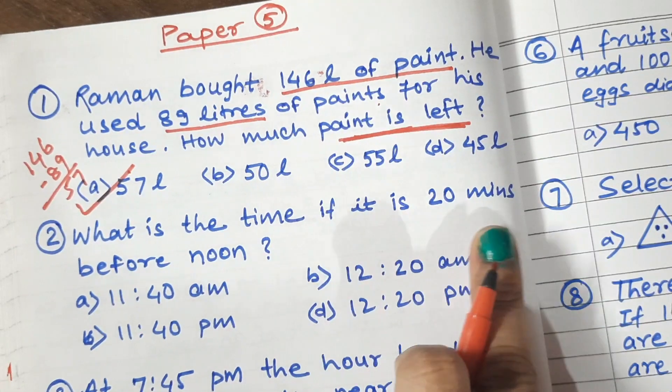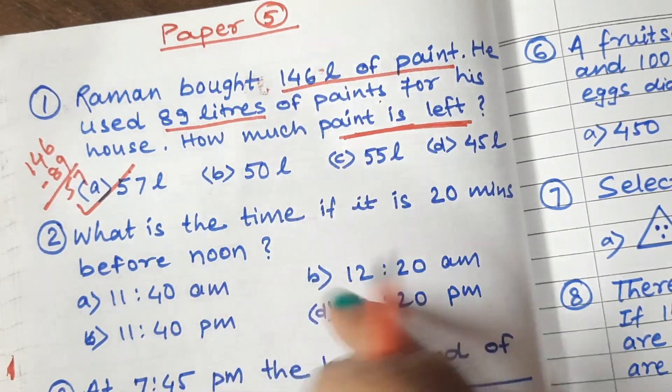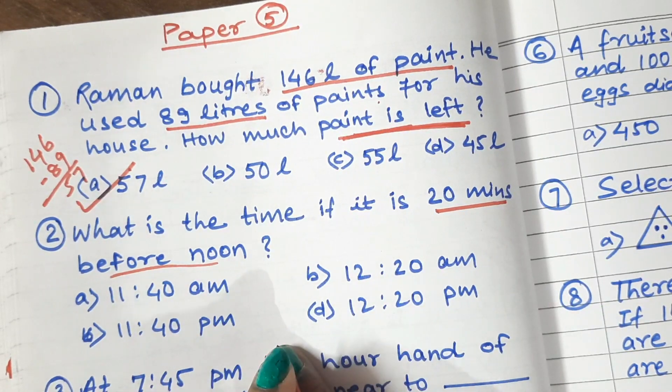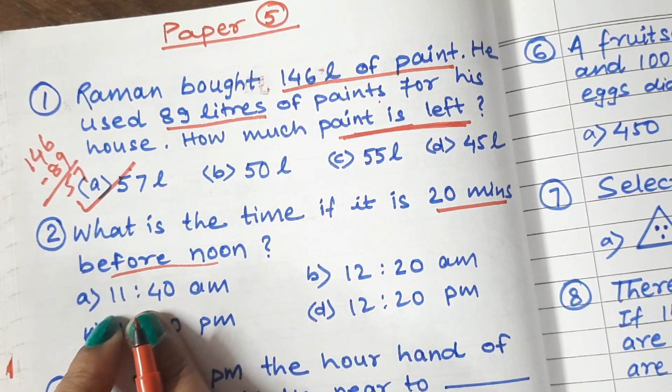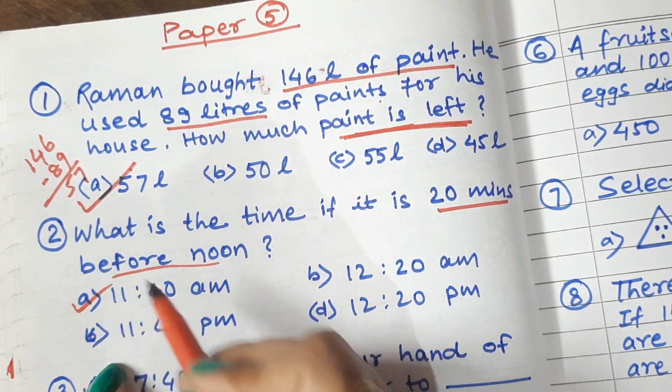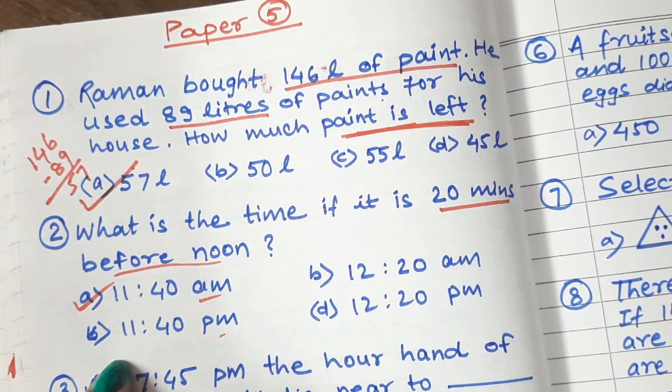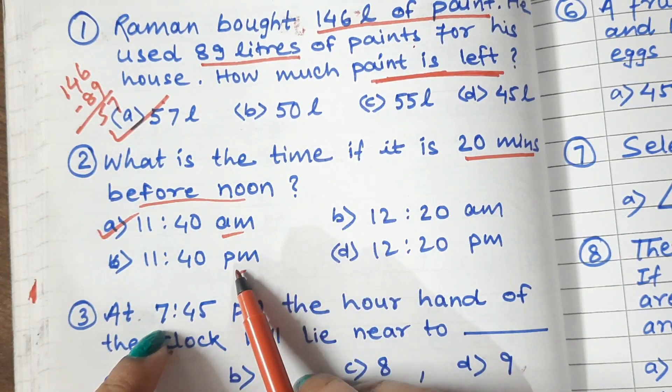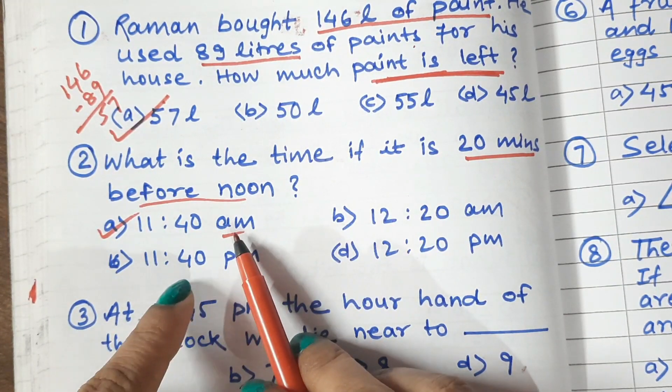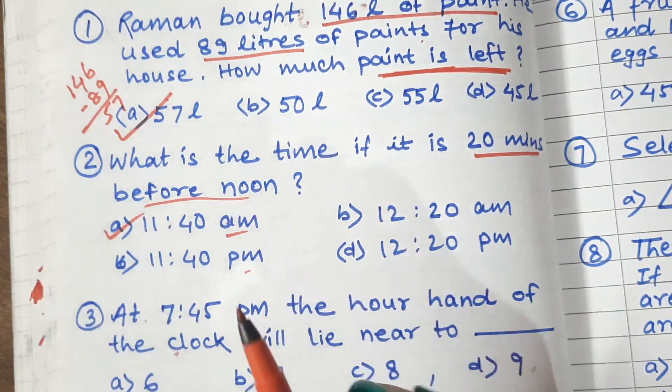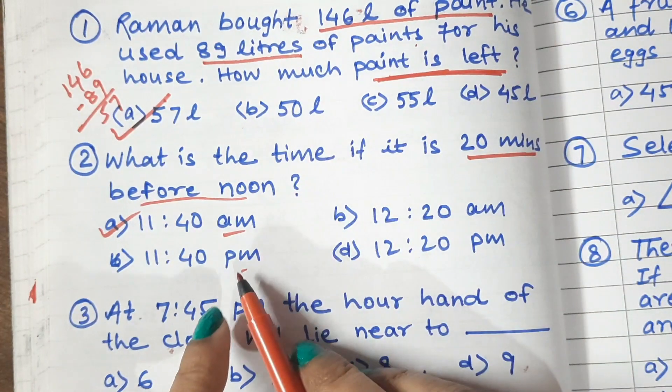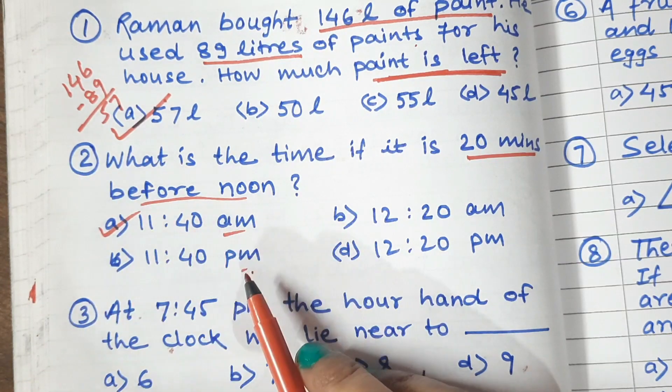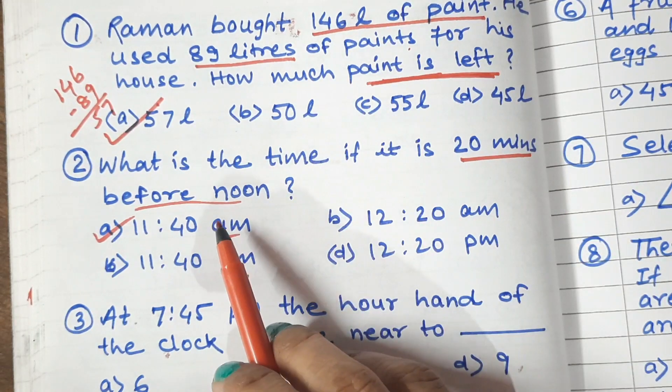Question 2: What is the time if it is 20 minutes before noon? Now, it is 20 minutes before noon. Noon, which means at 12 o'clock. What is the time before? 11:40 am. Here, kids are confused with am and pm. So I must tell you, am is ante meridian and pm is post meridian. Antimeridian is before noon. And post meridian is after noon.